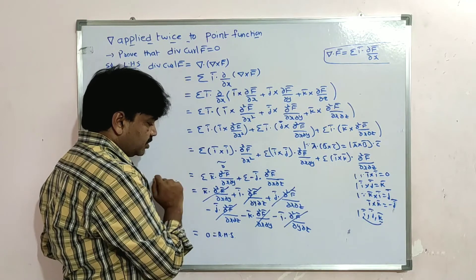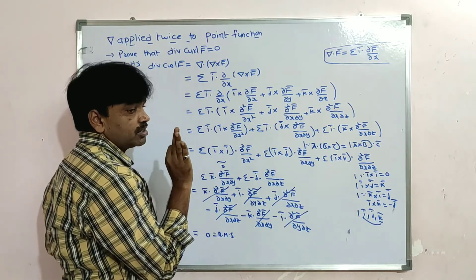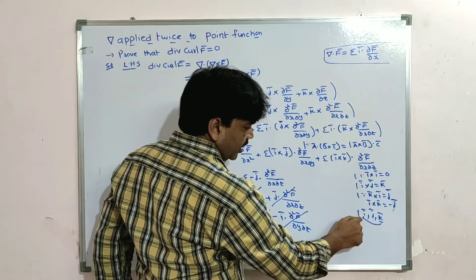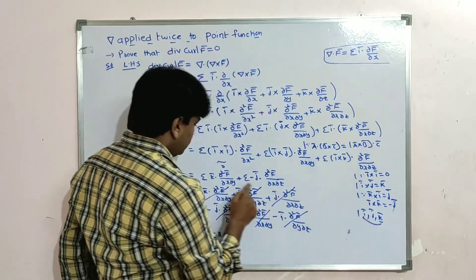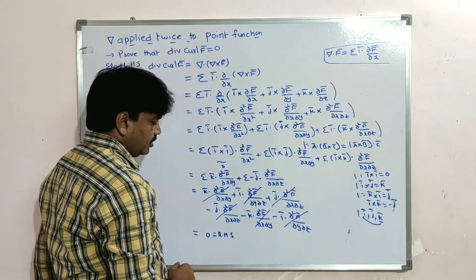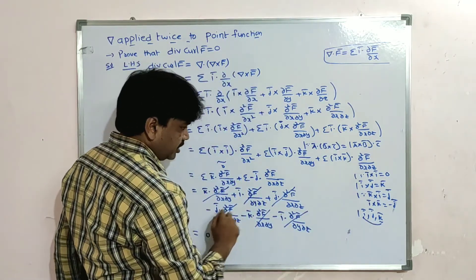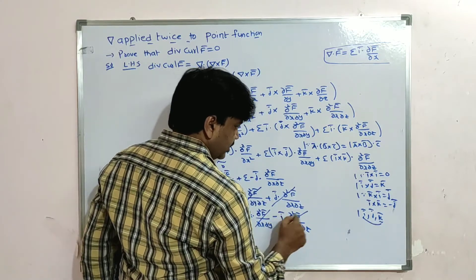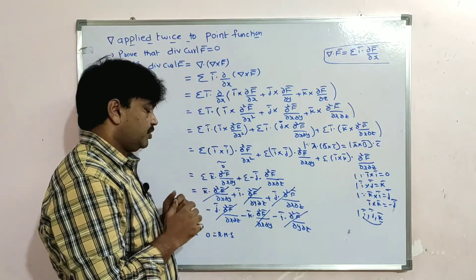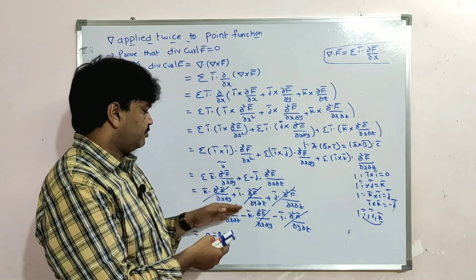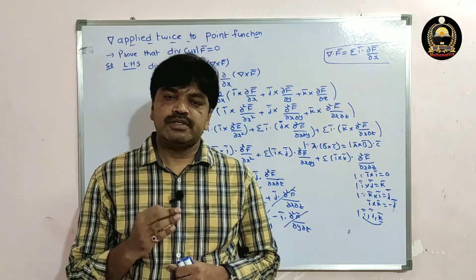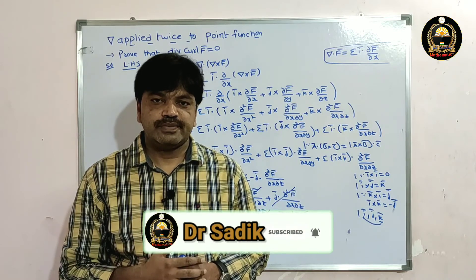The order i, j, k is very important when expanding the summation. If you have k̅, the immediate next term is i̅, then j̅. Observing the plus and minus terms, they cancel each other. Finally we get zero. Hope you understand — please subscribe this channel, like and share this video.